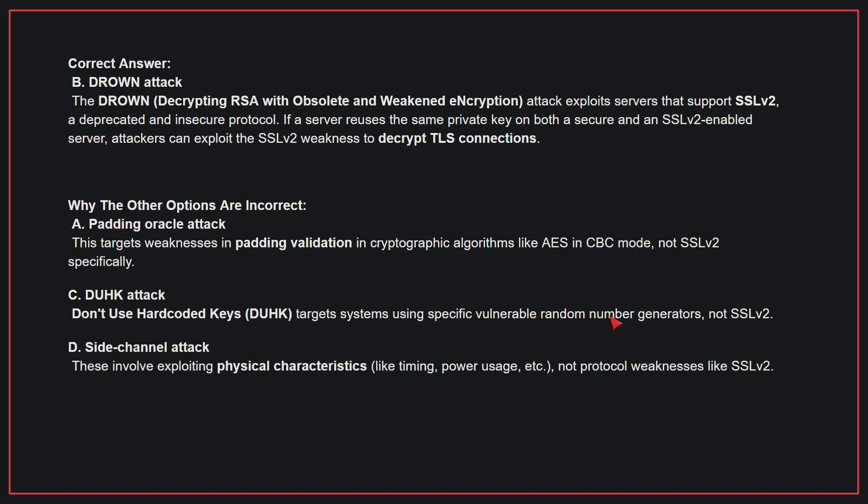Why the other options are incorrect: A — Padding Oracle attack. This targets weaknesses in padding validation in cryptographic algorithms like AES in CBC mode, not SSL v2 specifically. C — DUHK attack. DUHK targets systems using specific vulnerable random number generators, not SSL v2. D — Side channel attack. These involve exploiting physical characteristics, not protocol weaknesses like SSL v2. Therefore, the correct answer is B.